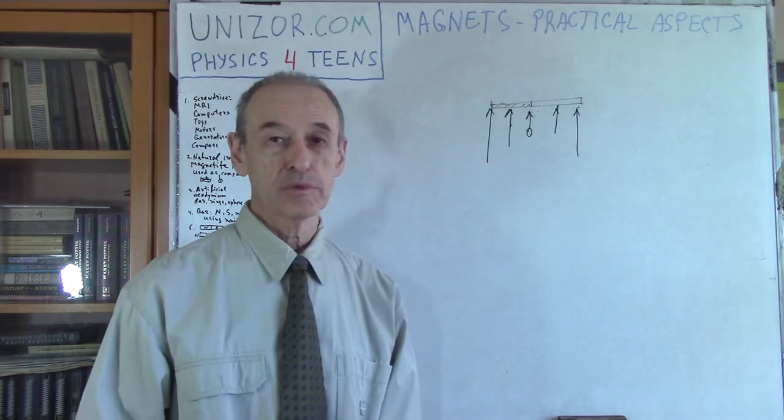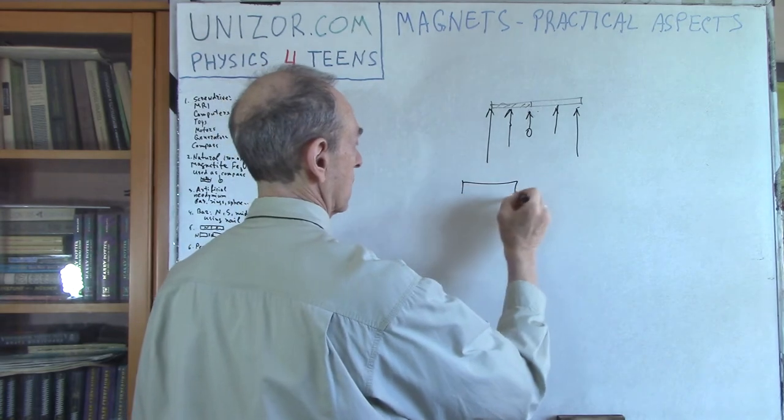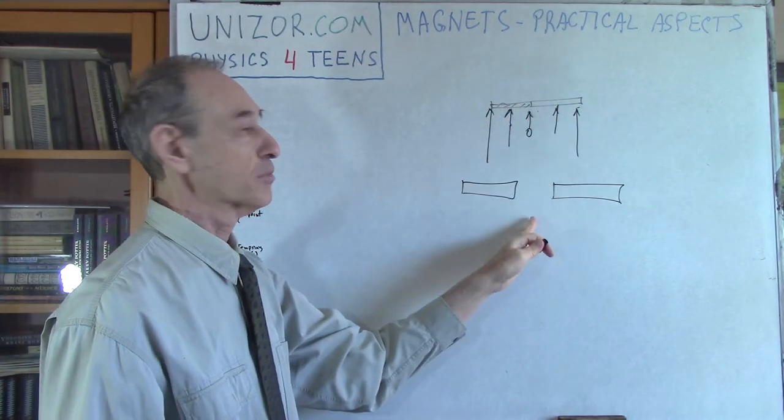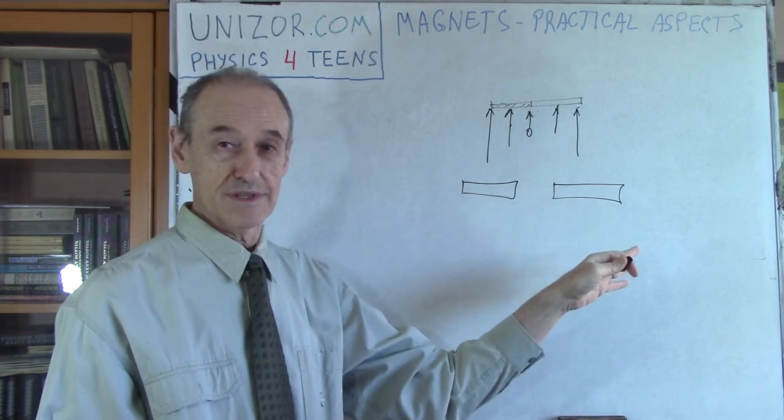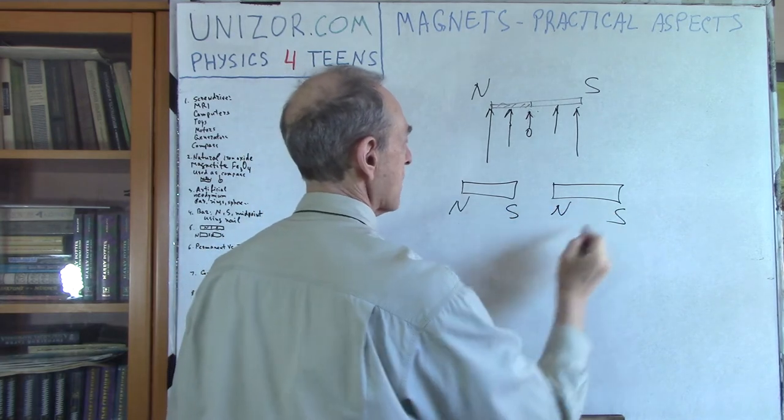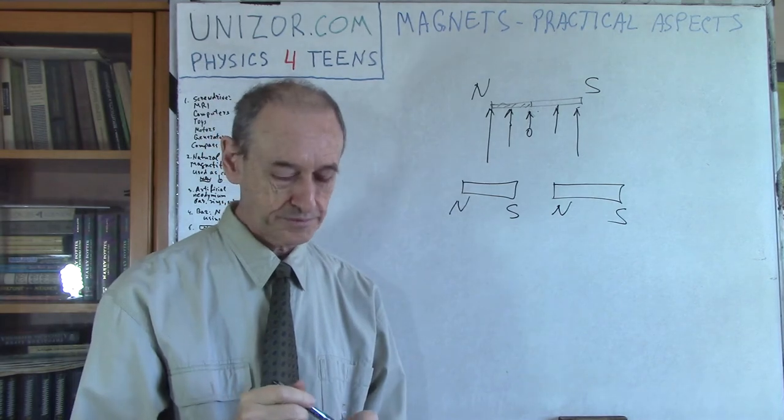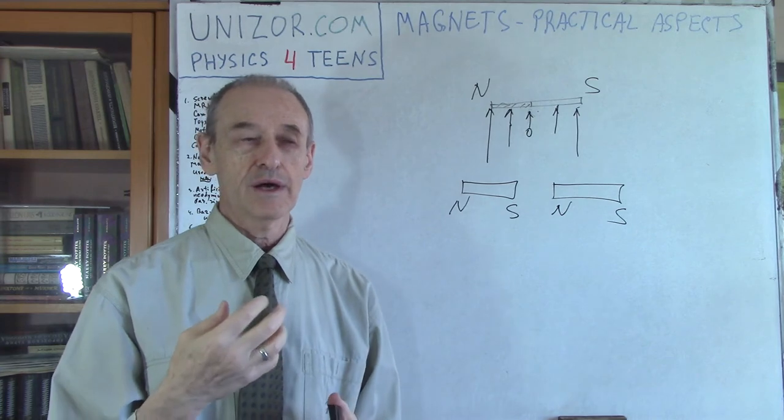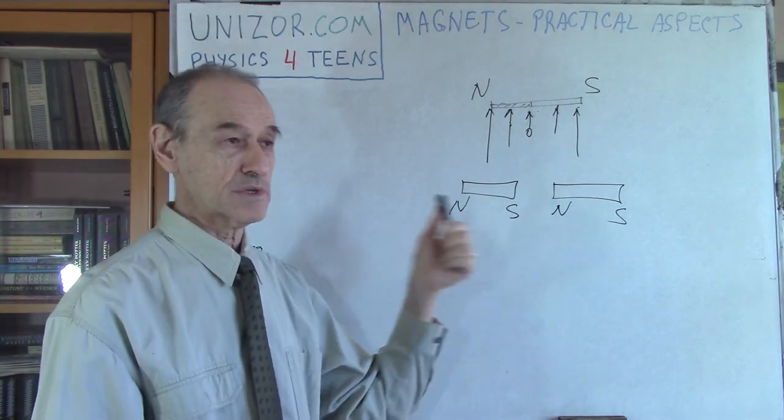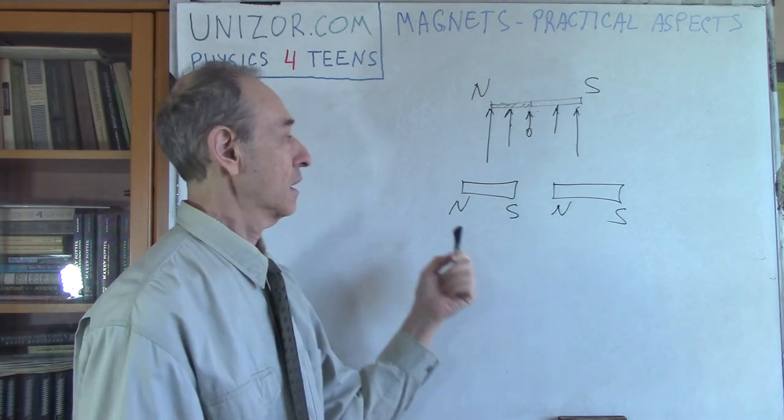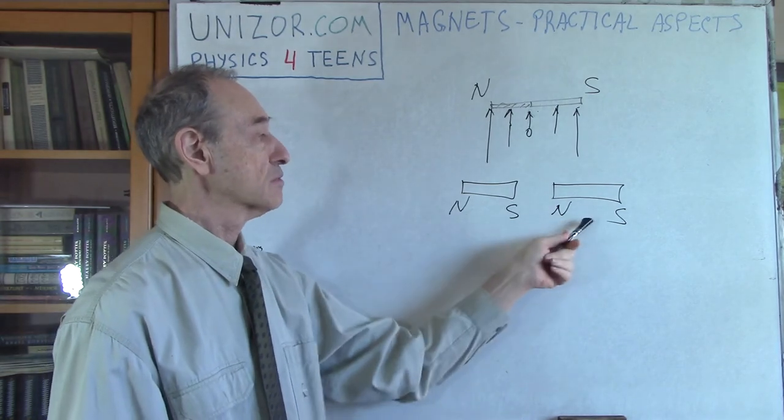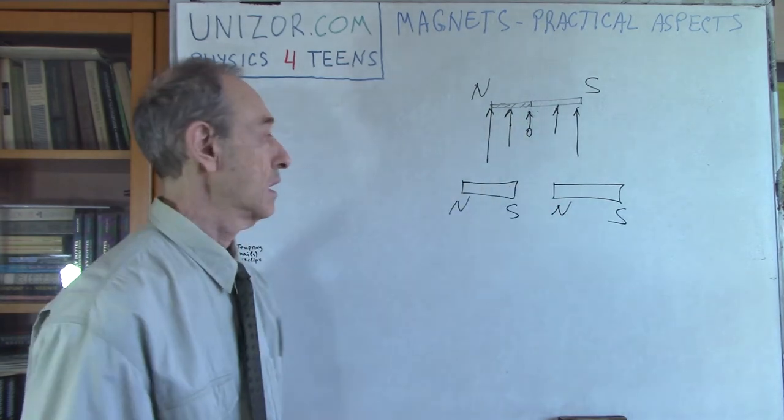What happens if you just cut this magnet in the middle? Will you have only, you see, this is the north part for instance, this is the south part. If you break it in the middle, will you have only north in this particular case and only south in this particular case? No, absolutely not. If this is north and this is south, this is north and this is south, this is north and this is south. Every piece of this will have two poles. It's related to basically the reason why magnetic field exists. There is no such thing as a single pole permanent magnet. It's always two. If you divide it in half, you will still have two pieces. Obviously these will be weaker, each of these will be weaker than this one.